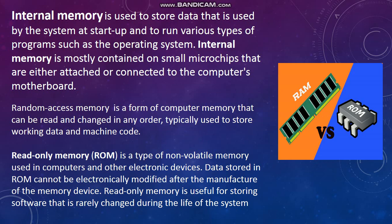Internal memory has two types: Random Access Memory and Read Only Memory. You can see there is an image of RAM and ROM. Random Access Memory is a form of computer memory that can be read and changed in any order, typically used to store working data and machine code. Read Only Memory is a type of non-volatile memory used in computers and other electronic devices. Data stored in ROM cannot be electrically modified after the manufacture of the memory device. Read Only Memory is useful for storing software that is rarely changed during the life of the system. Non-volatile means that you cannot change the memory.